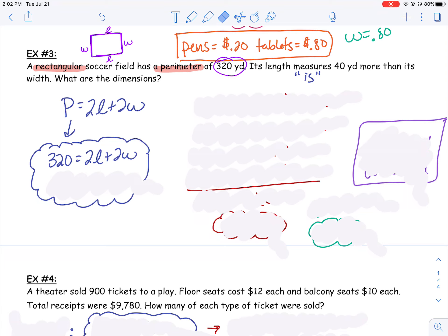So now I actually have the first equation already. I have 320 equals 2l plus 2w. I have included my l and my w in one equation all about perimeter.